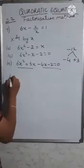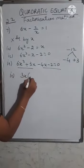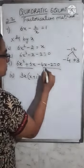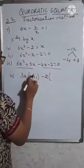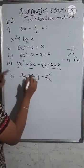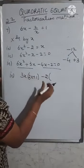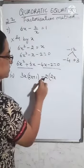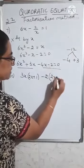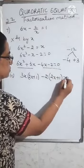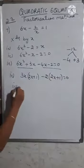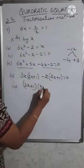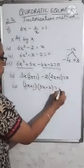Grouping: from the first two terms, 2x is common giving 2x(3x - 2), and from the next two, 1 is common giving 1(3x - 2). Since minus is taken out, the sign changes. This gives (2x + 1)(3x - 2) = 0.